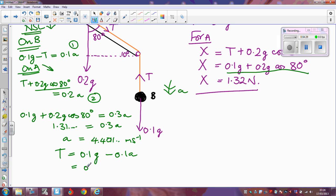So if I substitute in, so I do my 0.1g minus 0.1 times that 4.401 that I've saved, T comes out as 0.53988, which rounds to 0.540 newtons. So I'm going to go back to the test.